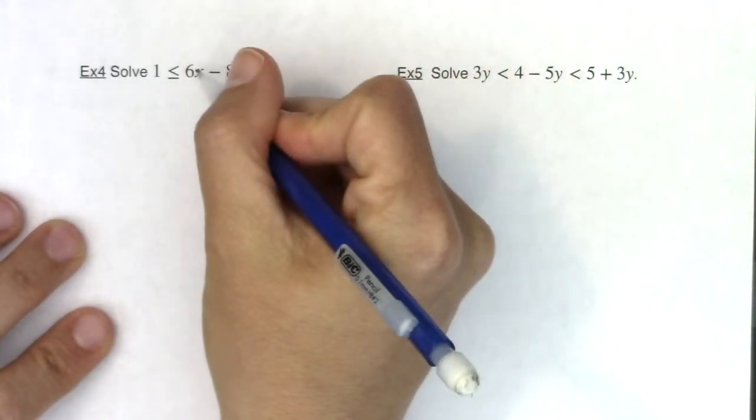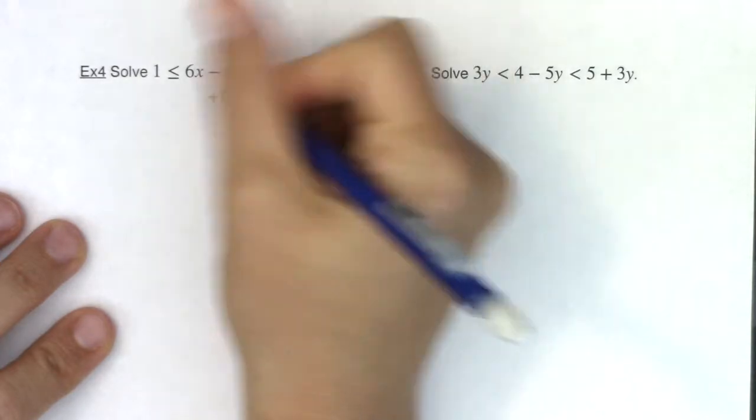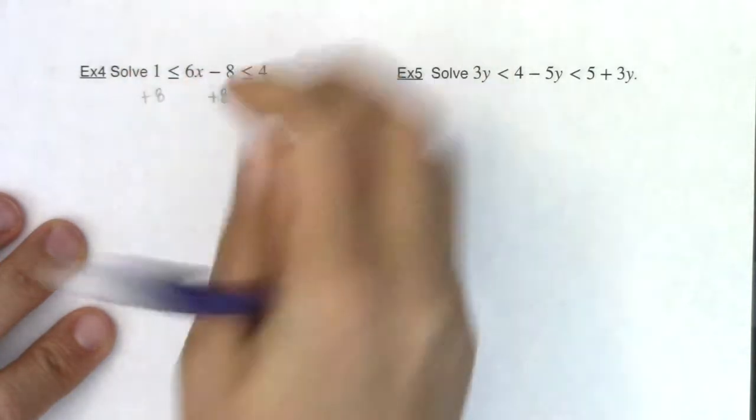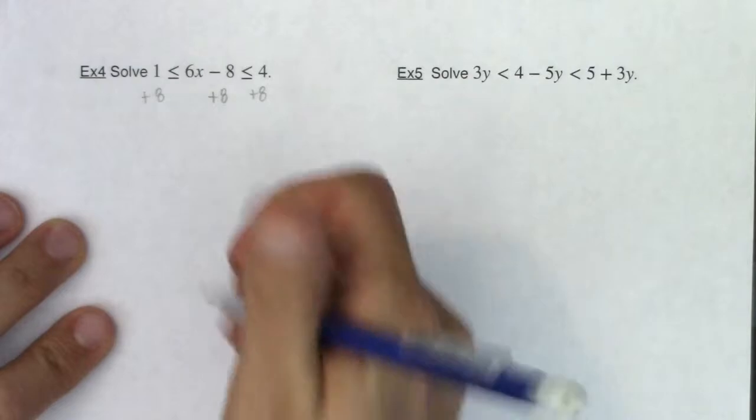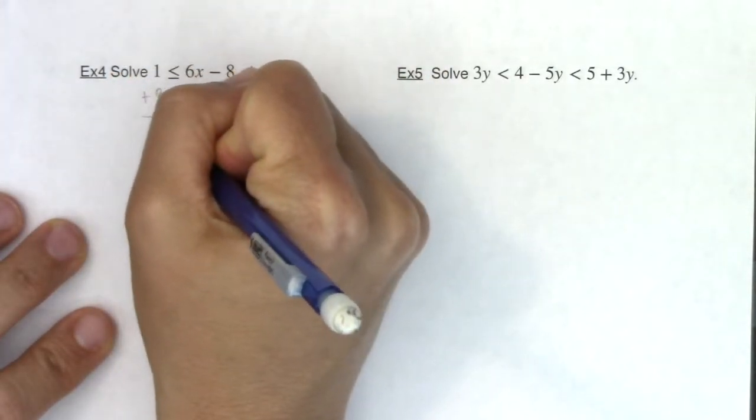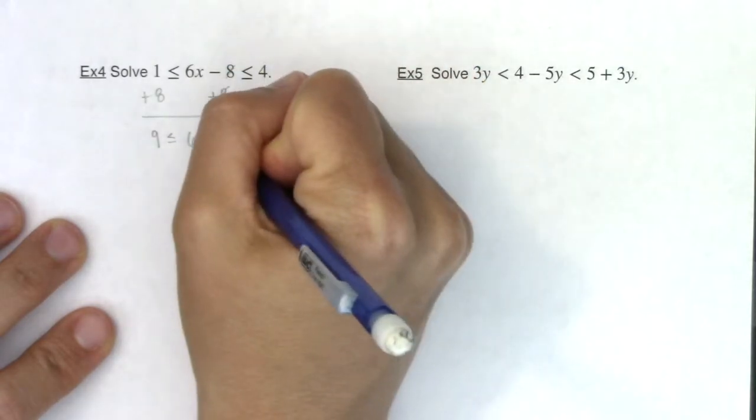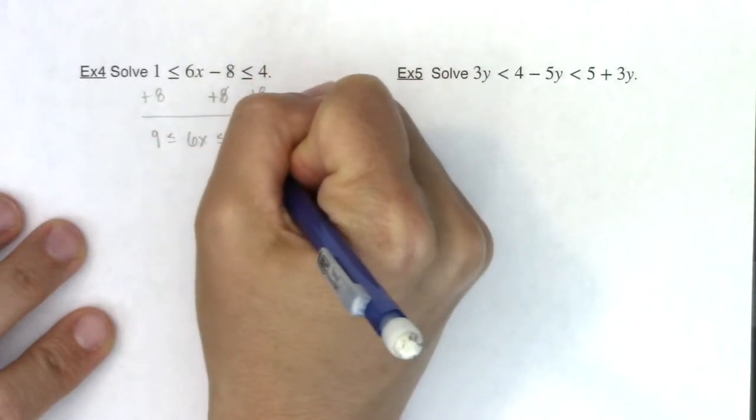If I wanted to solve for x, I need to add eight, and you would typically add eight to both sides, but now you have three sides. So I'm going to add eight to all three parts of that inequality. That's going to simplify. I'm going to get a nine here. I'm going to get less than or equal to 6x because the eights are going to cancel, and then four plus eight is 12.